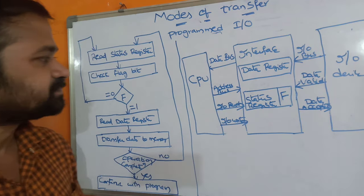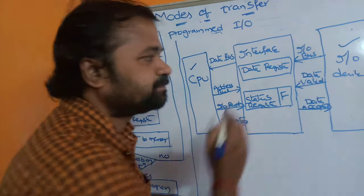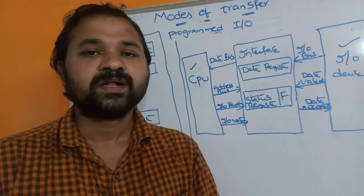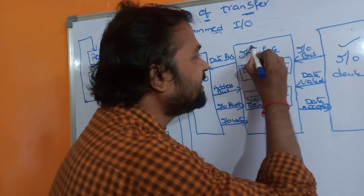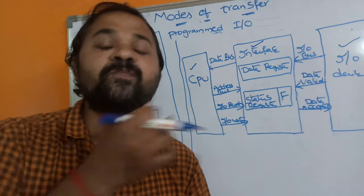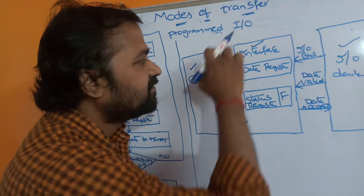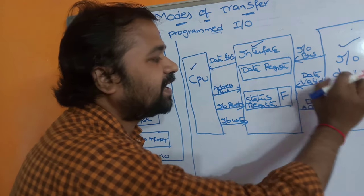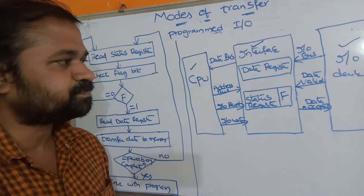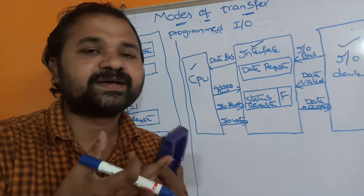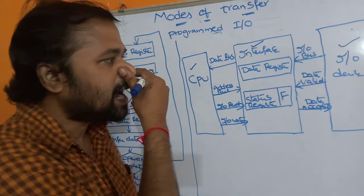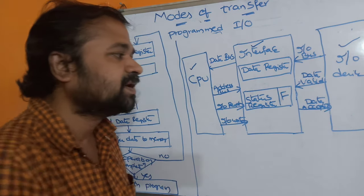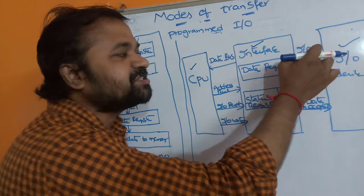Let us see this diagram first. Here we have CPU and IO device. We know that there are several differences that exist between CPU and IO devices. In order to resolve those differences we use an IO interface or IO module. So between CPU and IO device we have an input output interface or IO module which resolves the differences between CPU and input output device. The IO device places some information on the IO bus, and after placing the information on the IO bus, the corresponding IO device enables the data valid line. This data valid line specifies that some information is present in the IO bus.